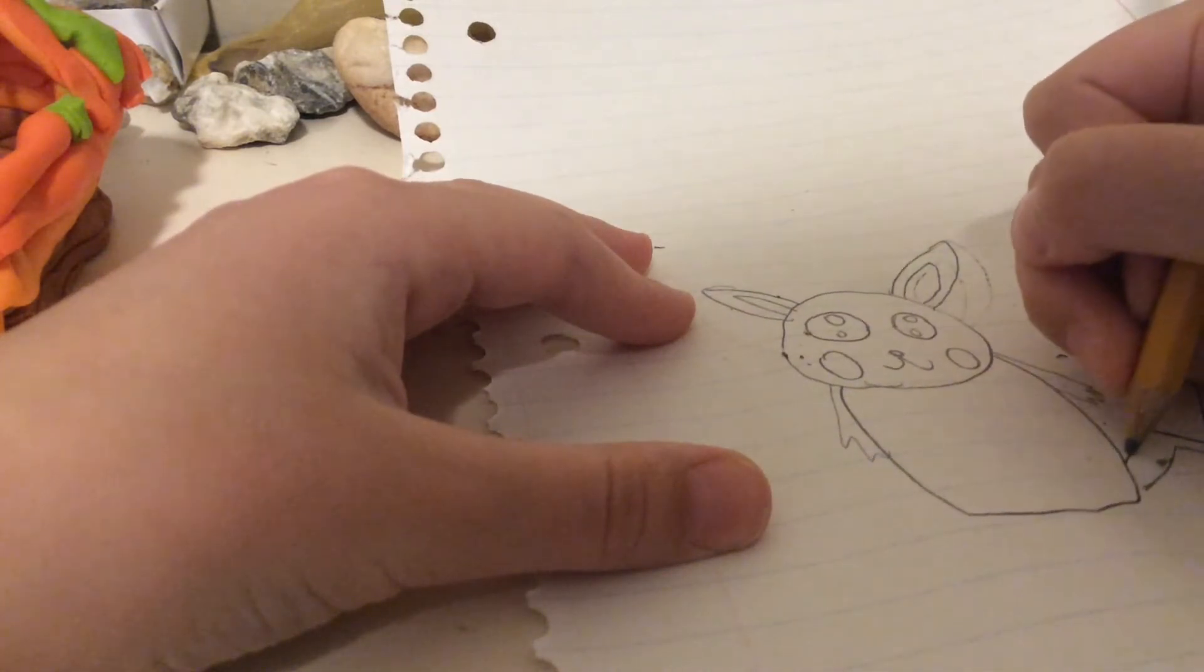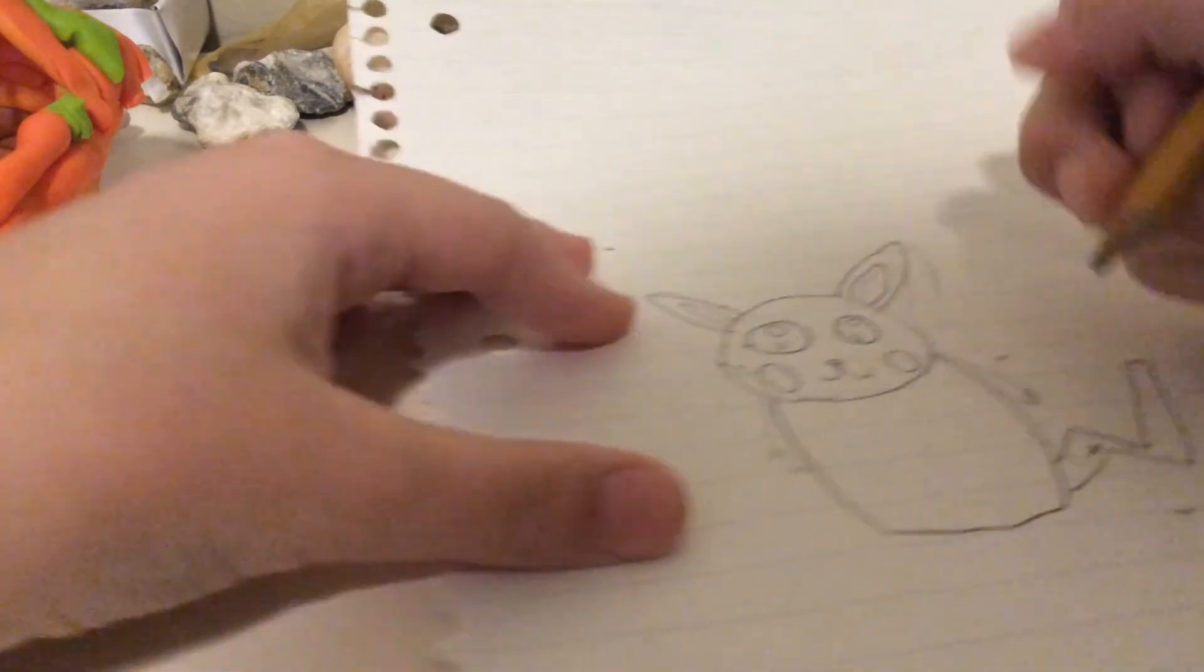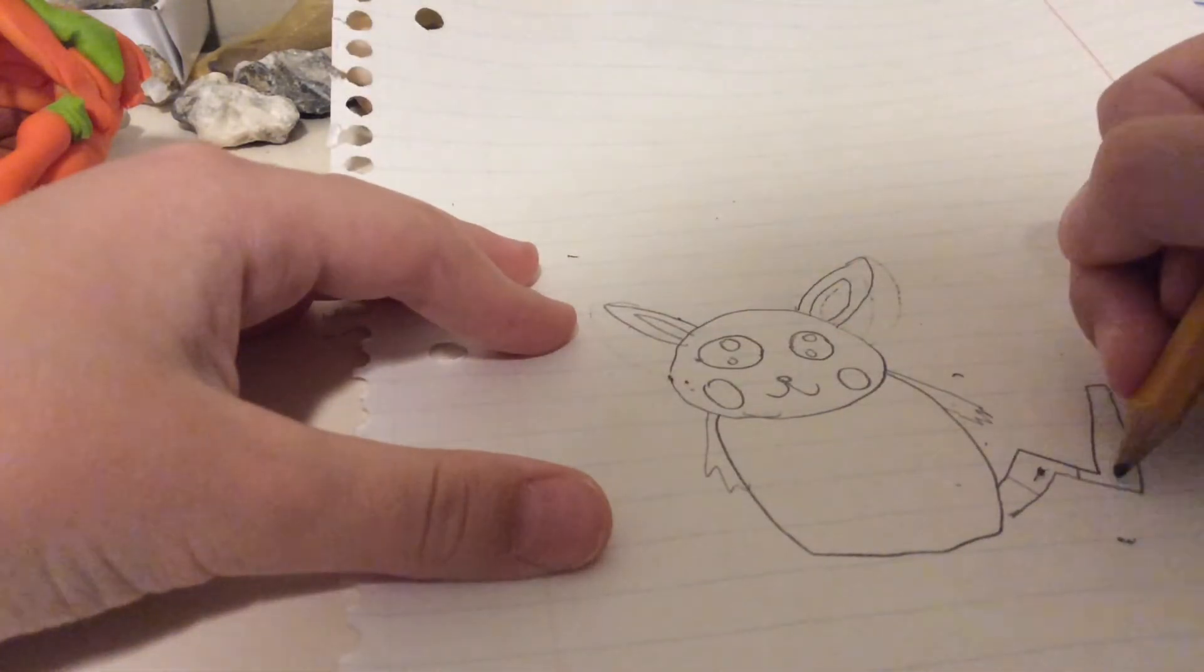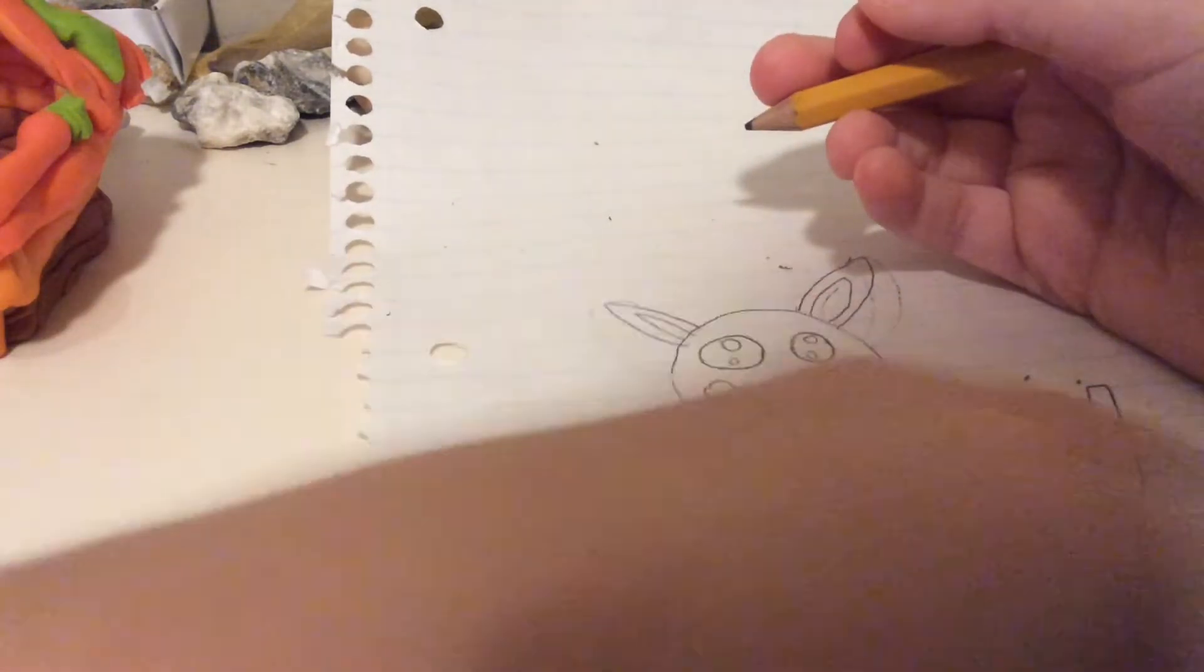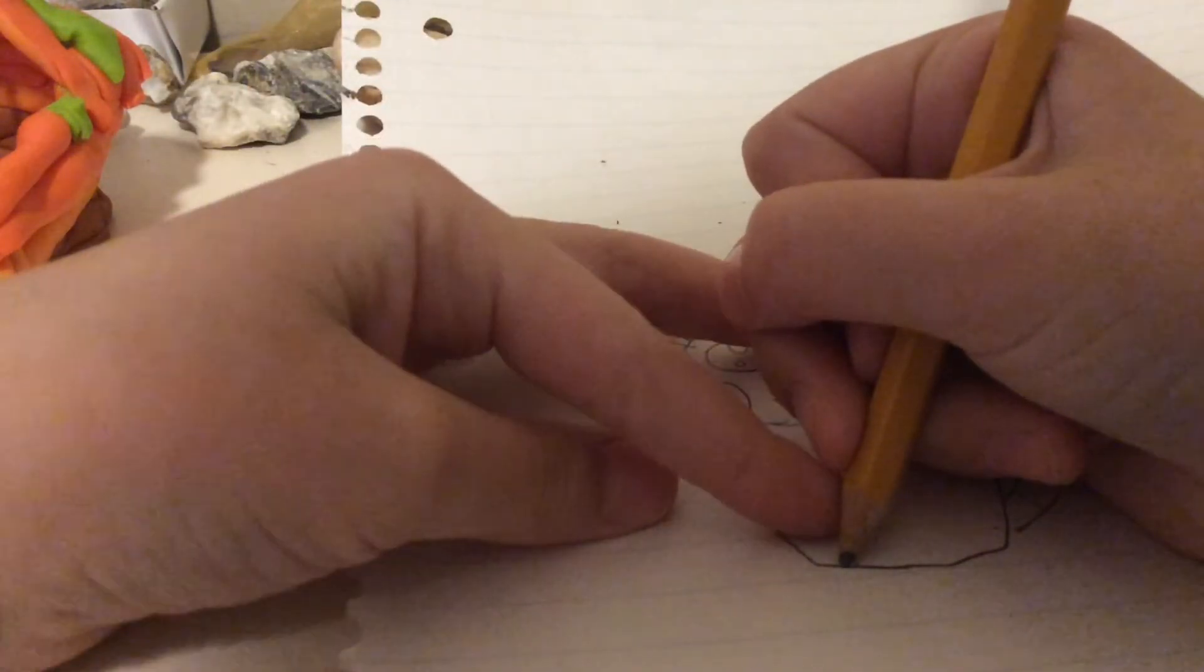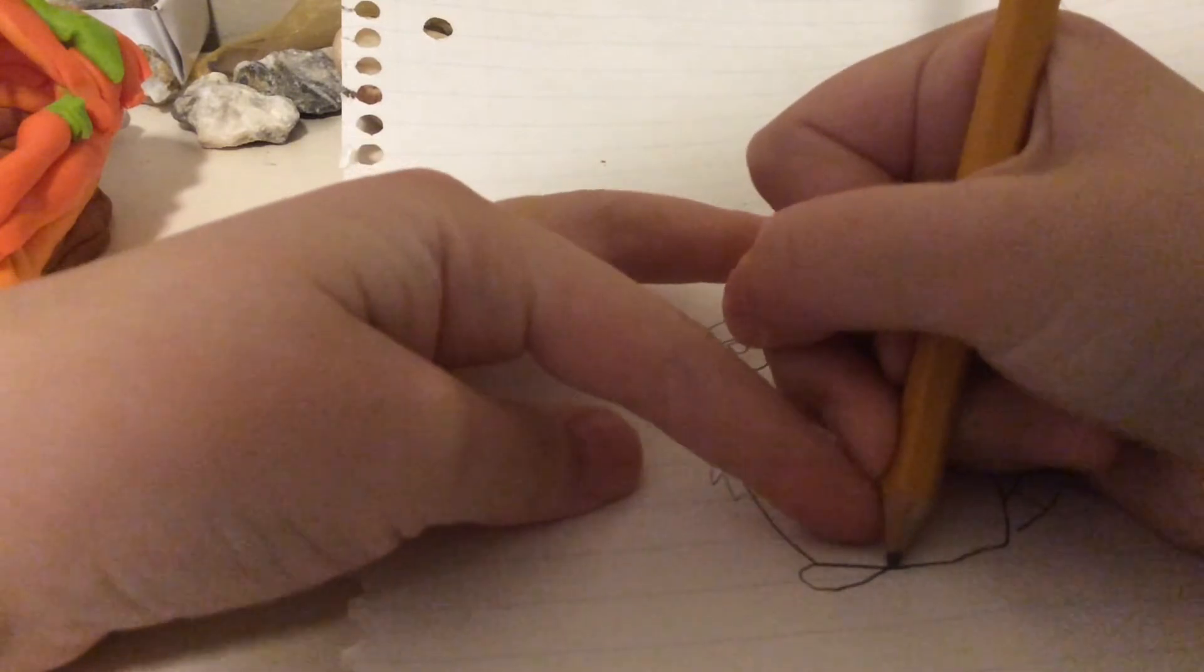This part of it is brown, right here. This part of it is yellow, and this part. And normally his whole body is yellow, but I will show you how to color him at the end, and you can copy me.